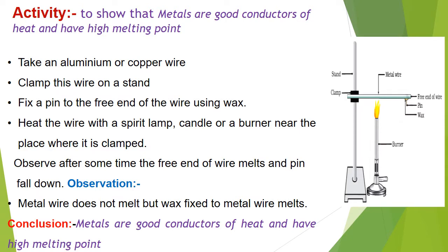An activity will show that metals are good conductors of heat and have high melting points. For this purpose, an apparatus is set up: we take an aluminum or copper wire and clamp it on a stand, fix a pin to the free end of the wire using wax. Then we heat the wire with a spirit lamp or burner near the place where it is clamped.